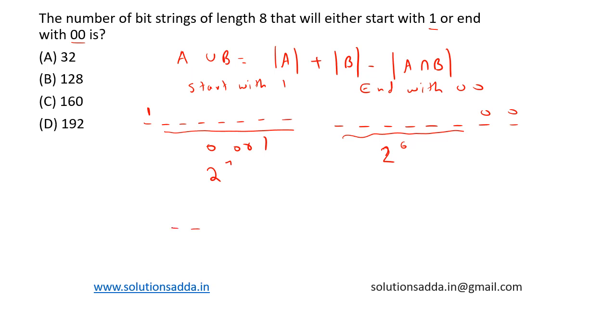We have 8 bit string: 1, 2, 3, 4, 5, 6, 7, 8. Let's assume string starts with 1 and ends with 00. Now we have 5 positions, so 2 to the power 5 possibilities are there. This is A intersection B. This can be thought of A, this can be thought of B, and this is A intersection B.